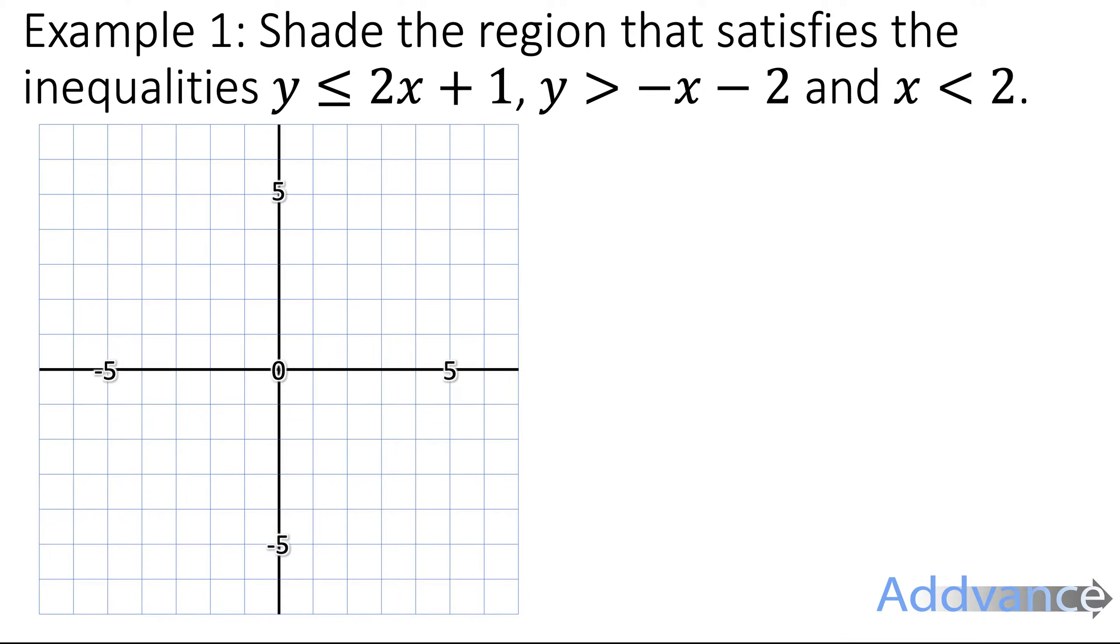Example 1 says: shade the region that satisfies y ≤ 2x + 1, y > -x - 2, and x < 2. We take those inequalities and we're going to make straight line equations out of them. So for example, y is less than 2x + 1, we're going to make that into y = 2x + 1.